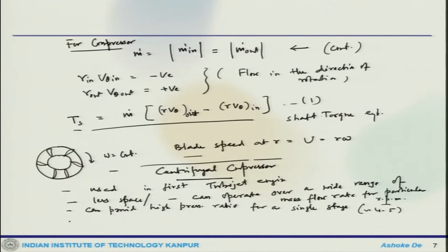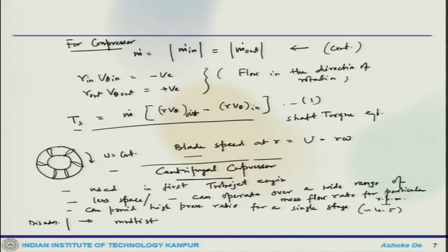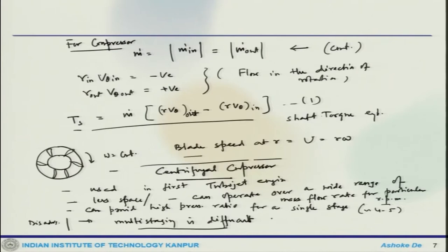The disadvantage is that to obtain very high pressure ratios in modern gas turbine engines, you require multi-staging, but with the centrifugal compressor, multi-staging is not straightforward — it is rather difficult. So one can say that to obtain a high pressure ratio for modern jet engines, multi-stage axial compressors are often used because multi-staging is quite difficult for a centrifugal compressor.